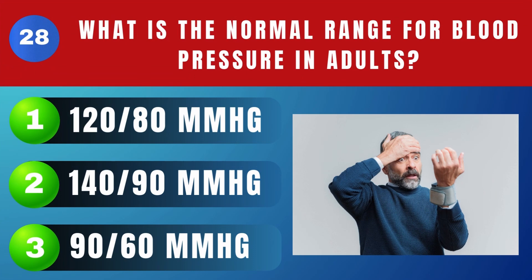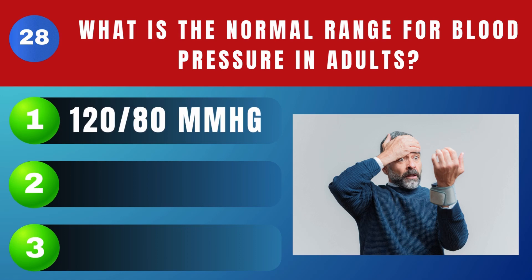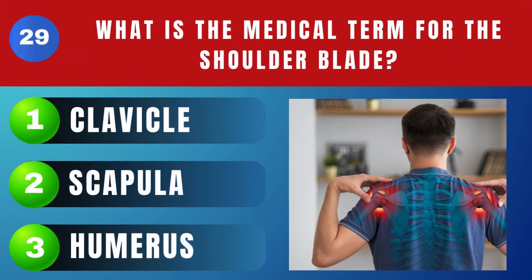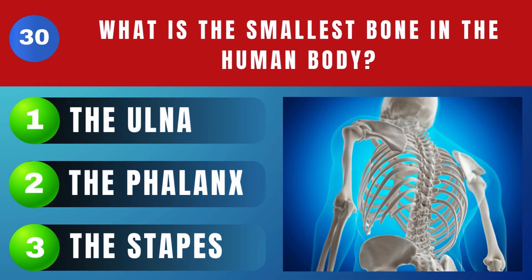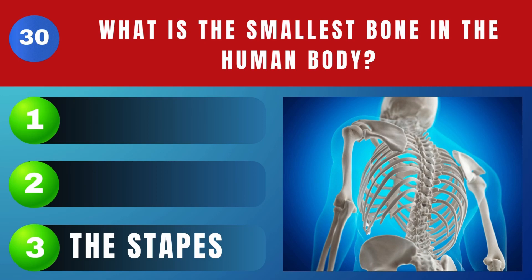What is the normal range for blood pressure in adults? 120 to 80 millimeters of mercury. What is the medical term for the shoulder blade? Scapula. What is the smallest bone in the human body? The stapes.